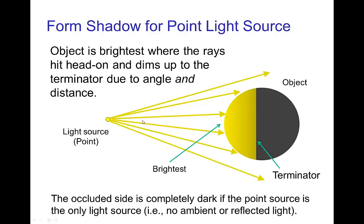So with a point light source, of course it's going to be brightest where the light rays are hitting head on, and for a sphere that's also the closest point to the light source. And then as we move around the sphere, we have both increasing distance and increasing angle until we reach the terminator and then it's black behind it.